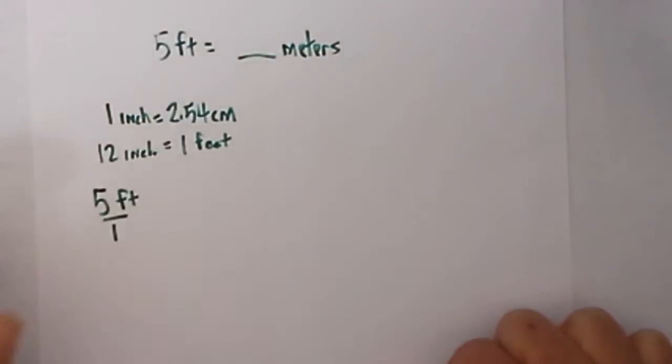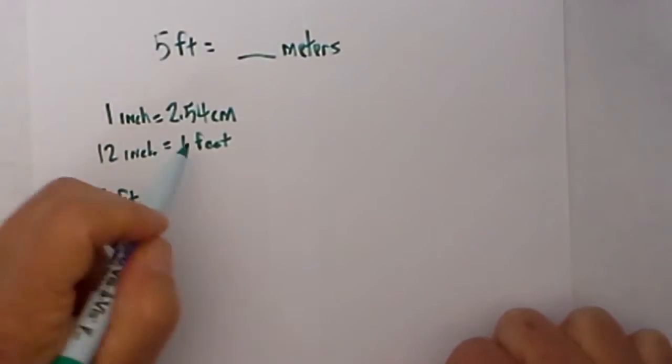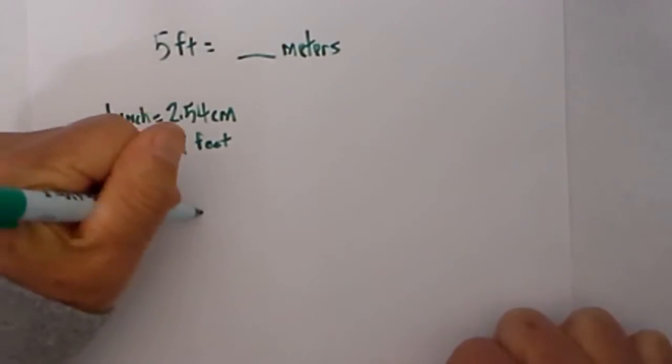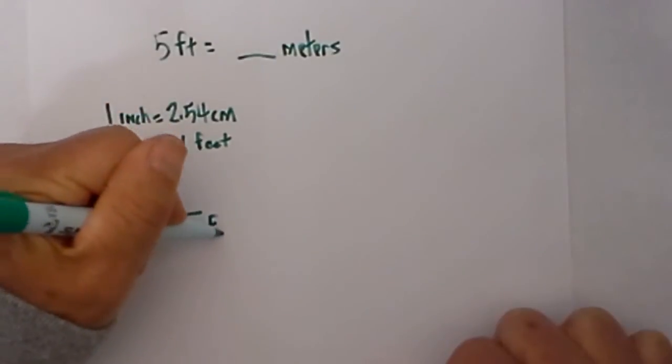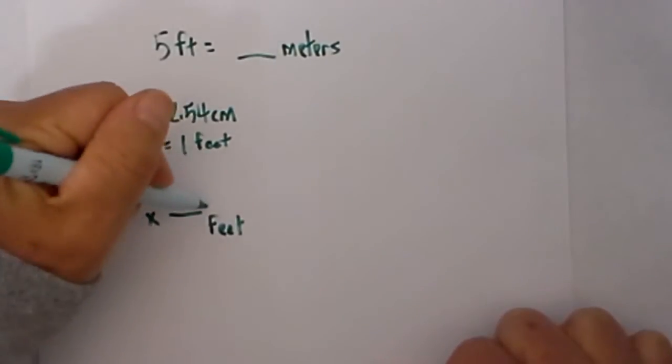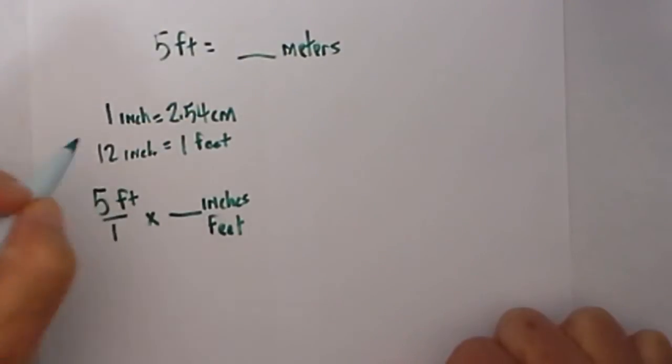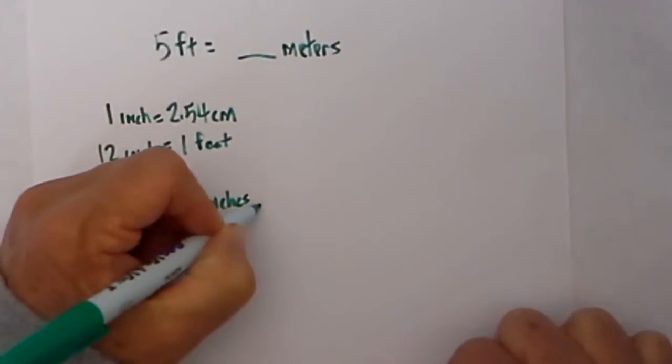I know that 1 inch is equal to 2.54 cm so I need to first convert to inches. So I am going to put feet on the bottom and inches on top and I next place the one by the larger unit. I know that 1 foot is equal to 12 inches.